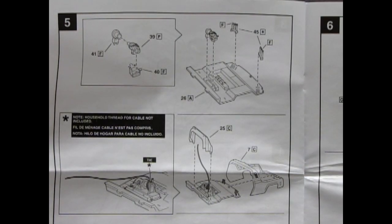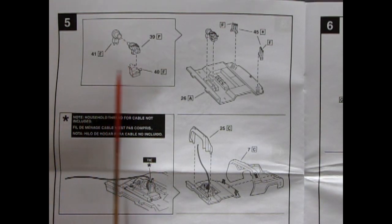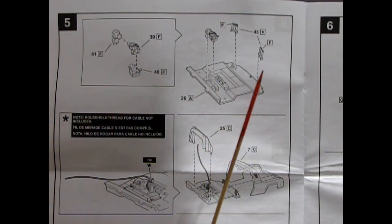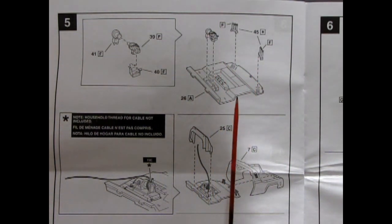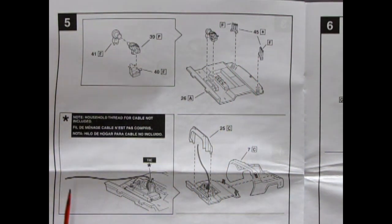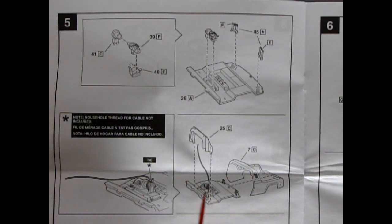Now this is where our build starts to get a little more intense. Here we have the three-piece winch for our tow truck as well as the controls which go onto the back pan. Then down here it says note household thread for cable not included, so you'll have to supply that yourself. But you will tie it onto the winch here and then leave it loose so that when you put on this bar here it can find a nice place to go and then you've got your back panel here.